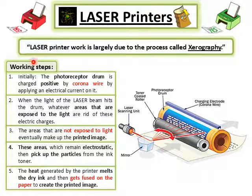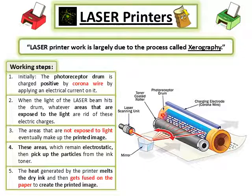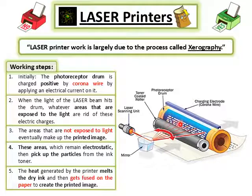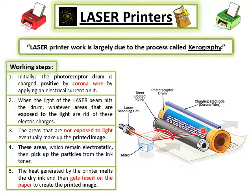To summarize the working of the laser printer: first, we have a photoreceptor drum which is positively charged via the corona wire, through which current is passed. After the laser beam hits the photoreceptor drum, there are two areas: one area where light is exposed, which gets neutralized, and another area where light is not exposed, which retains its positive charge.